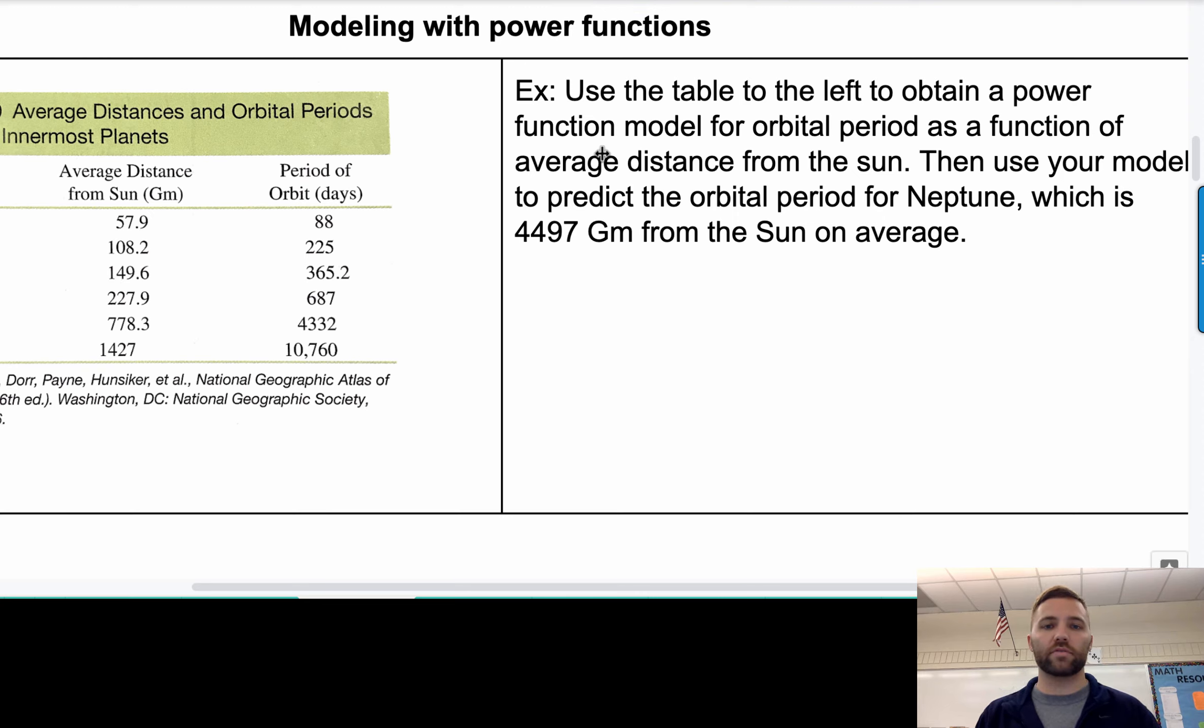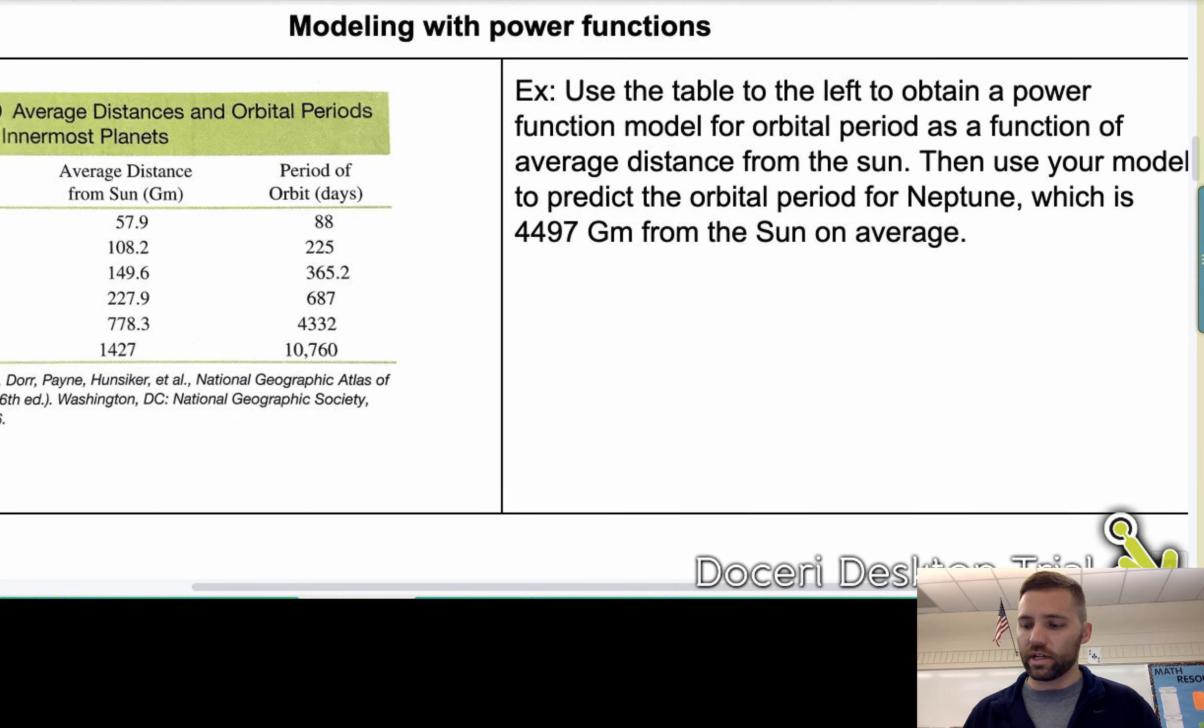Okay. On the TI-83 pluses, I believe you have to hit stat, calc, and then go down to, I believe it's A. But it's like power reg is what you're looking for. So, which is a power regression, right? And so you run that. And when you do, you should try it to make sure that you can get, that you get what I'm about to write down here. When you do that, you get Y equals 0.2, X to the 1.5 for your model.